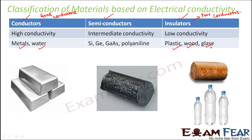In between conductors and insulators are the semiconductors. 'Semi' means half — they conduct, but not as well as good conductors, and they are not as poor as insulators. They have intermediate conductivity. Examples of semiconductors include silicon, germanium, gallium arsenide, and polyaniline.